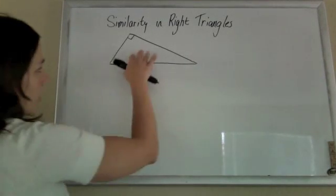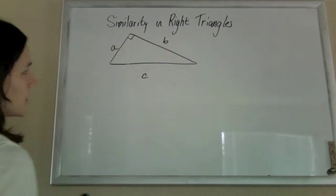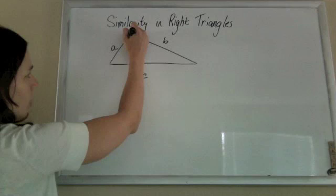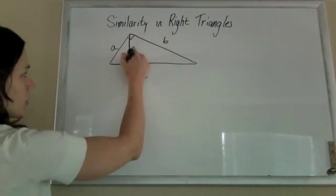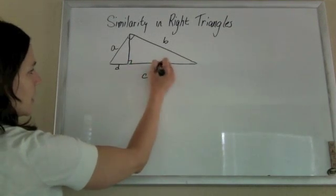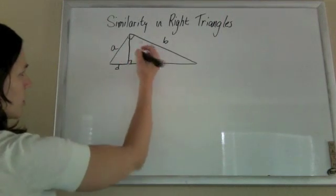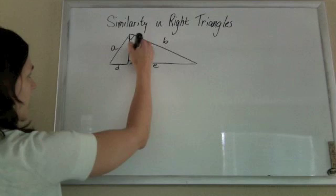Alright, so let's say we have a right triangle with legs A, B, and hypotenuse C, and that we draw an altitude to the hypotenuse, splitting that thing up into D and E, and then we'll have this little altitude here, maybe I will call it H for height.